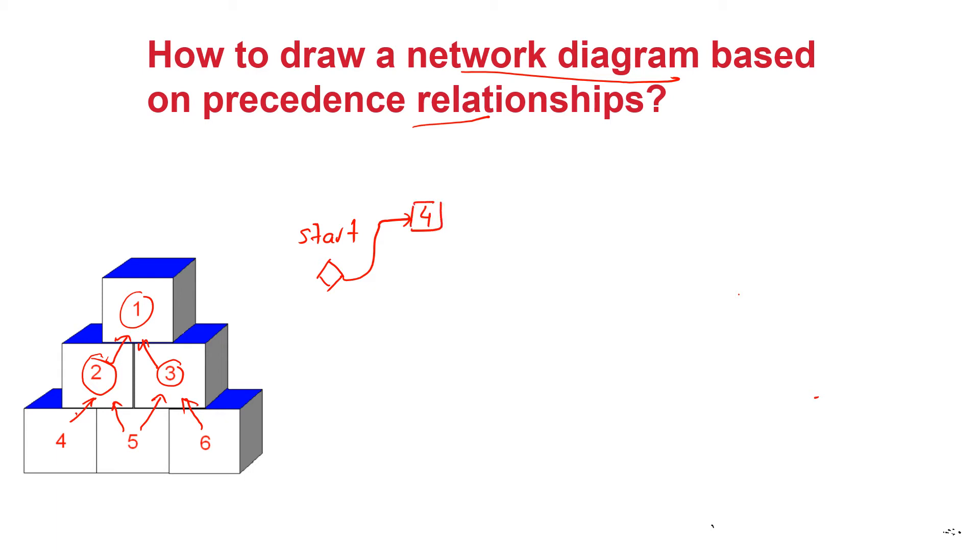So I'm placing 4, 5 and 6 soon after the start activity. Now activity 2 can only take place once activity 4 and 5 have been completed. So the start of activity 2 is dependent on completion of activity 4 and 5, and this type of a relationship is also referred to as a finish to start relationship which means that activity 4 must finish and likewise activity 5 must finish before we could commence work on activity 2.